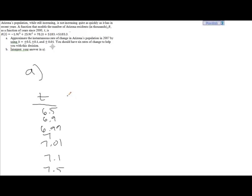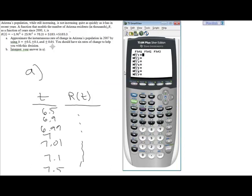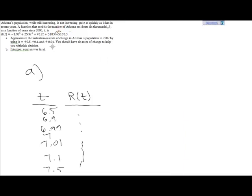Rather than having to longhand round all this stuff, we'll just plug this guy into our calculator: negative 1.9t to the third power plus 25.9t squared plus 78.2t plus 5183.3. It looks like there's a small typo there. It should just be this term right here and not this term.